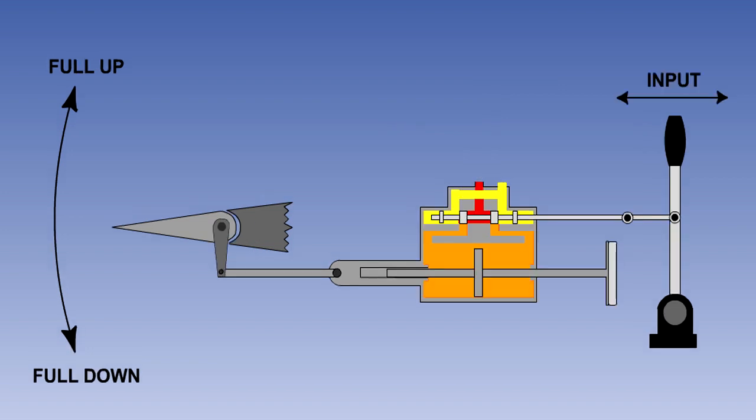In a fully powered flying control system, all of the work in operating the flying control is done hydraulically. There is no direct connection between the pilot's input and the flying control surface. The system components are very similar to those used in the power assisted system.